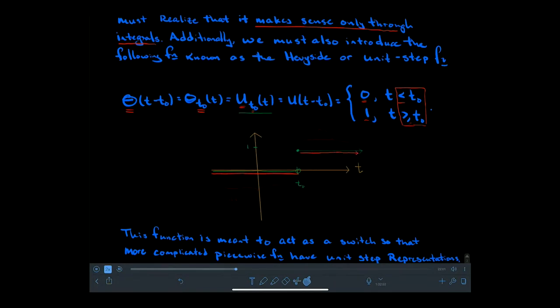It stays at the value one for the rest of time — a primitive jump discontinuity. We think about it as a step from zero to one, like a switching mechanism. This section represents the time period in which the function is off, and after t-naught, where the function is one, we can think of it as the function being on.